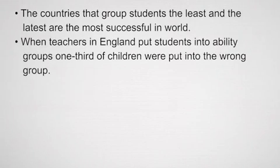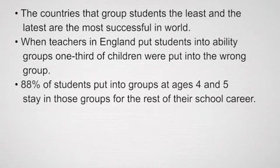When teachers in England put students into ability groups, researchers found that one third of the children were put into the wrong group, even just looking at achievement. We also know that about 88% of students put into groups at ages four and five stay in those groups for the rest of their school career.